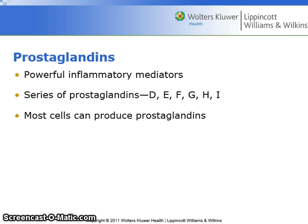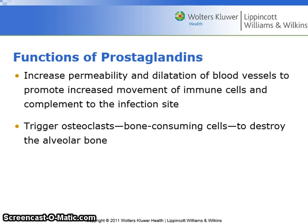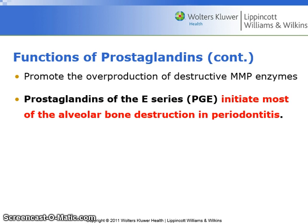Prostaglandins are powerful inflammatory mediators. The series of prostaglandins are D, E, F, G, H, and I. Most cells can produce prostaglandins. Prostaglandins increase the permeability and dilation of blood vessels to promote increased movement of immune cells and complement to the infection site. They trigger osteoclasts — the bone-destroying cells — to destroy the alveolar bone. Prostaglandins also promote the overproduction of destructive MMP enzymes.